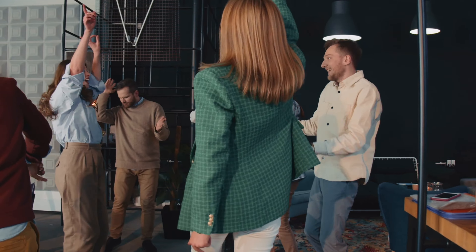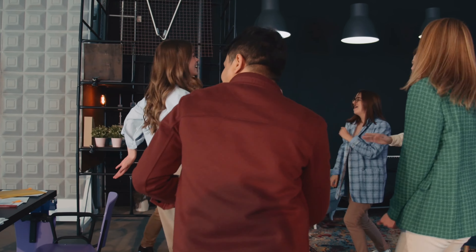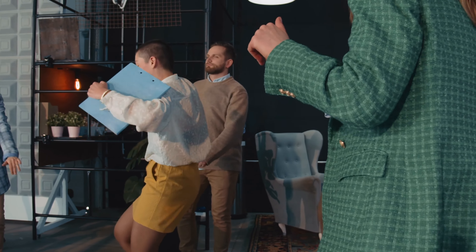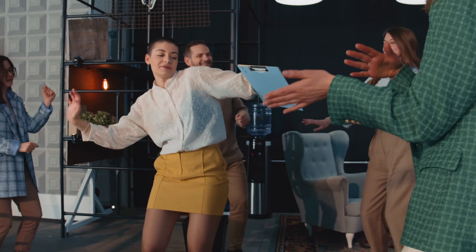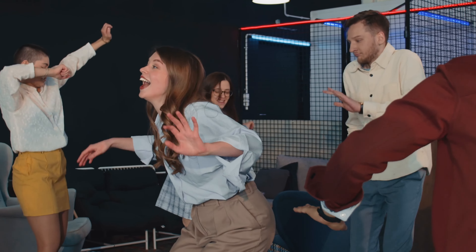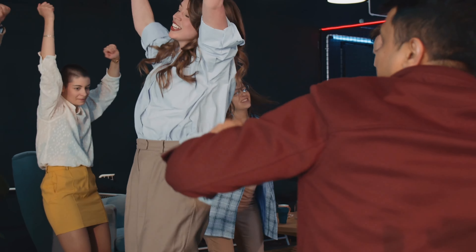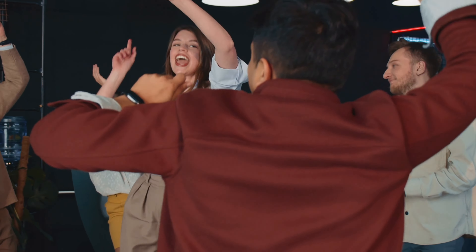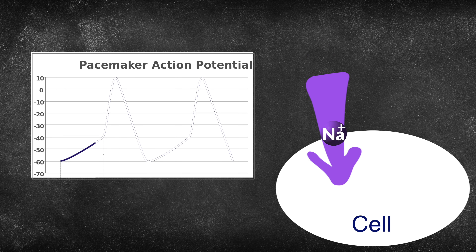When a bunch of positive ions come in, it's going to make the cell membrane more positive. Think of it like a room full of positive, happy people — the positivity level goes through the roof. Similarly, bringing positive ions in makes the membrane potential more positive. So what we have is the membrane potential increasing, becoming more positive.